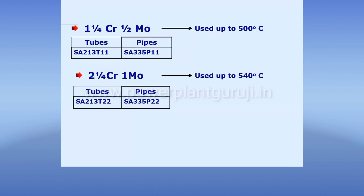Where the component temperature is not expected to increase beyond 540 degrees centigrade, we can generally use T22 metallurgy. But nowadays in the final superheater and final reheater, the steam temperature itself is around 540 degrees, so the metal temperature is in the range of around 555–560 degrees centigrade. There, T22 metallurgy cannot be used again, so where the metal temperature is expected to go beyond 540 degrees centigrade, we use an even higher metallurgy.